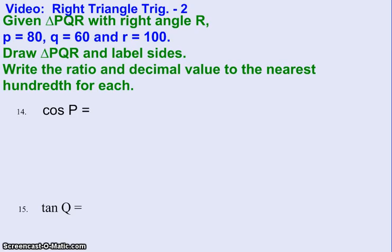For this problem, we're told that we have a triangle PQR that has a right angle R, and they tell us that little p equals 80, little q equals 60, and little r equals 100. I'll tell you what that means in a minute.